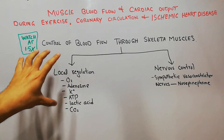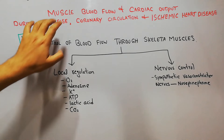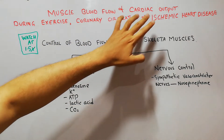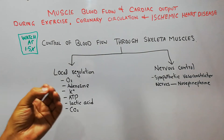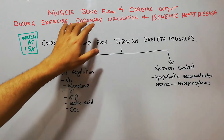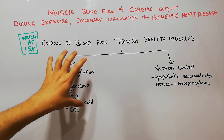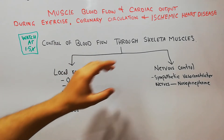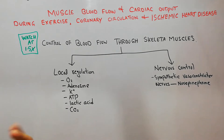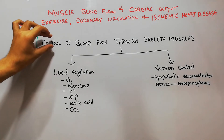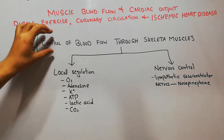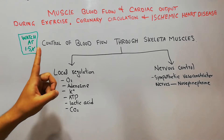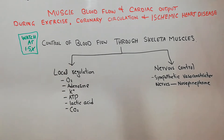We have started a new chapter about muscle blood flow and cardiac output during exercise, coronary circulation, and ischemic heart disease. In the first lecture of this chapter we discussed the normal blood flow of the skeletal muscles and the increase in blood flow that occurs during exercise. Now we are going to focus on the control mechanisms which will either increase or decrease the blood flow through the skeletal muscles.